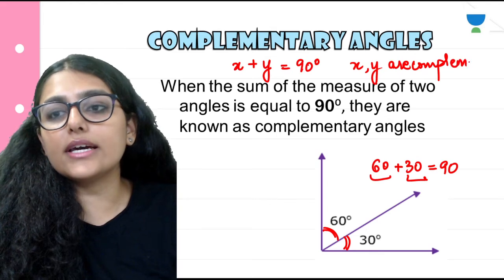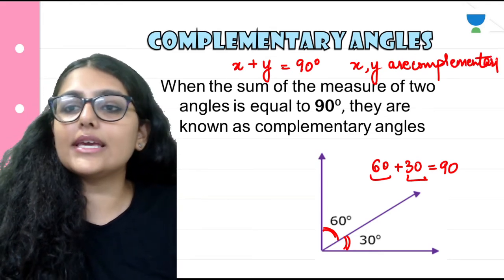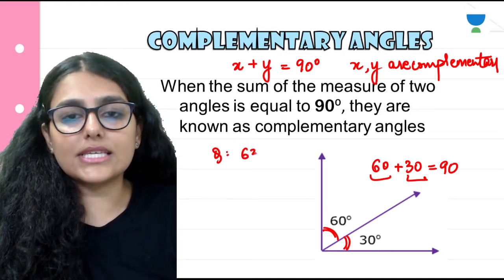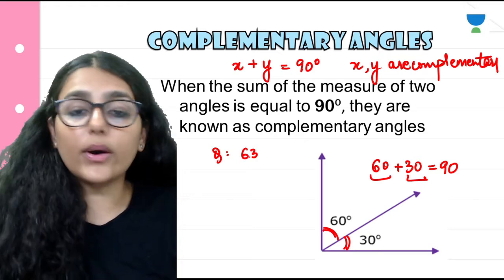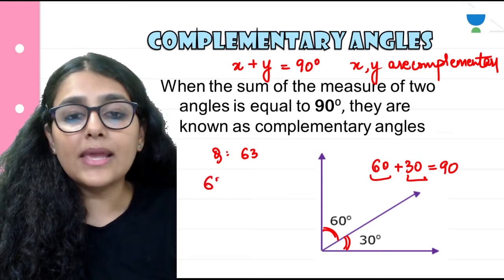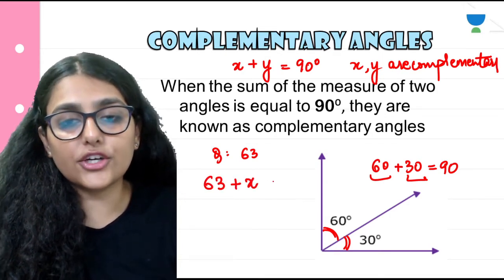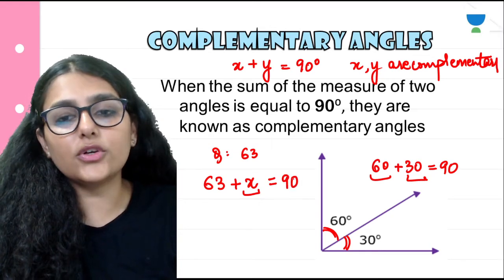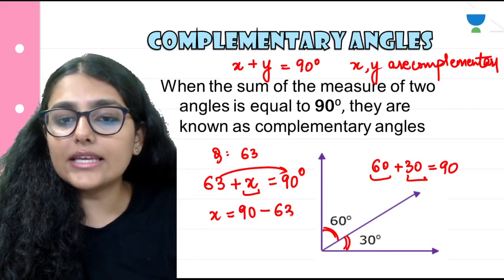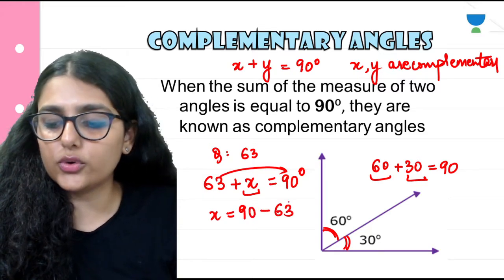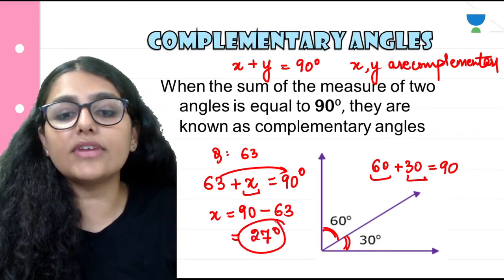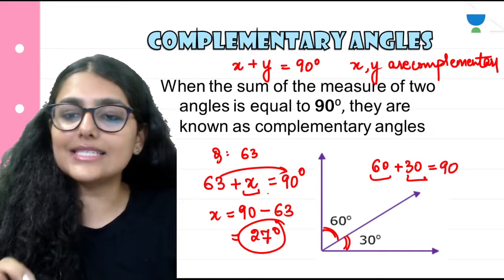Let's find out how to do it. For example, what is the complementary angle of 63 degrees? I know that the complementary angle is such that when I add the other angle, my answer should be equal to 90 degrees. So x equals 90 minus 63, which gives me 27. Therefore, the complement of 63 is 27 degrees, and the complement of 27 degrees is 63 degrees.